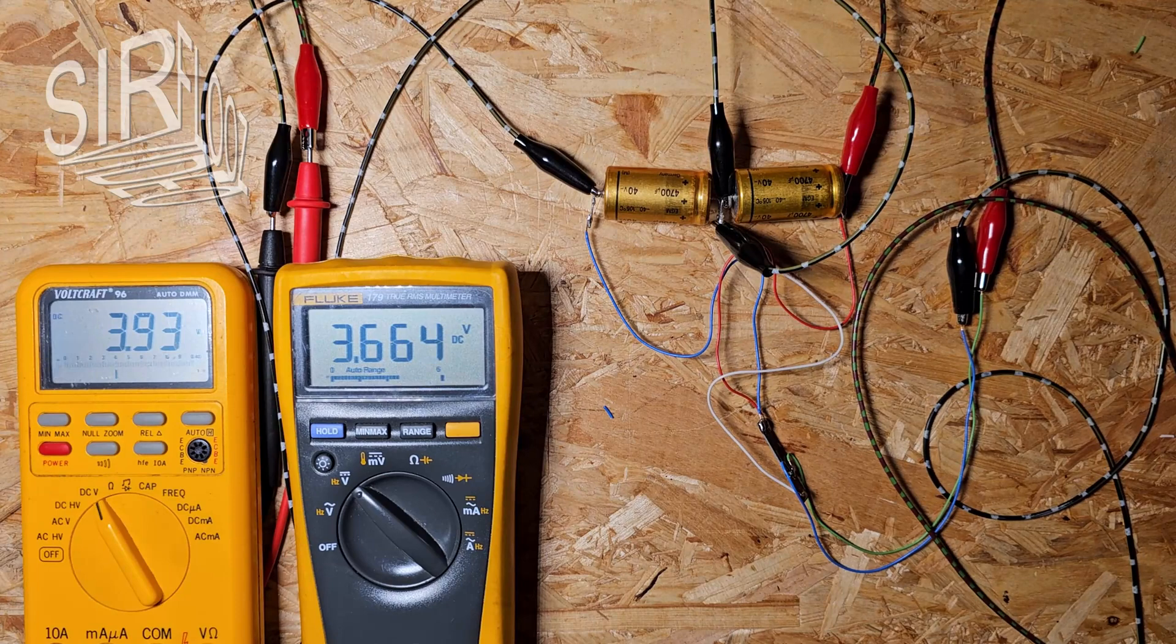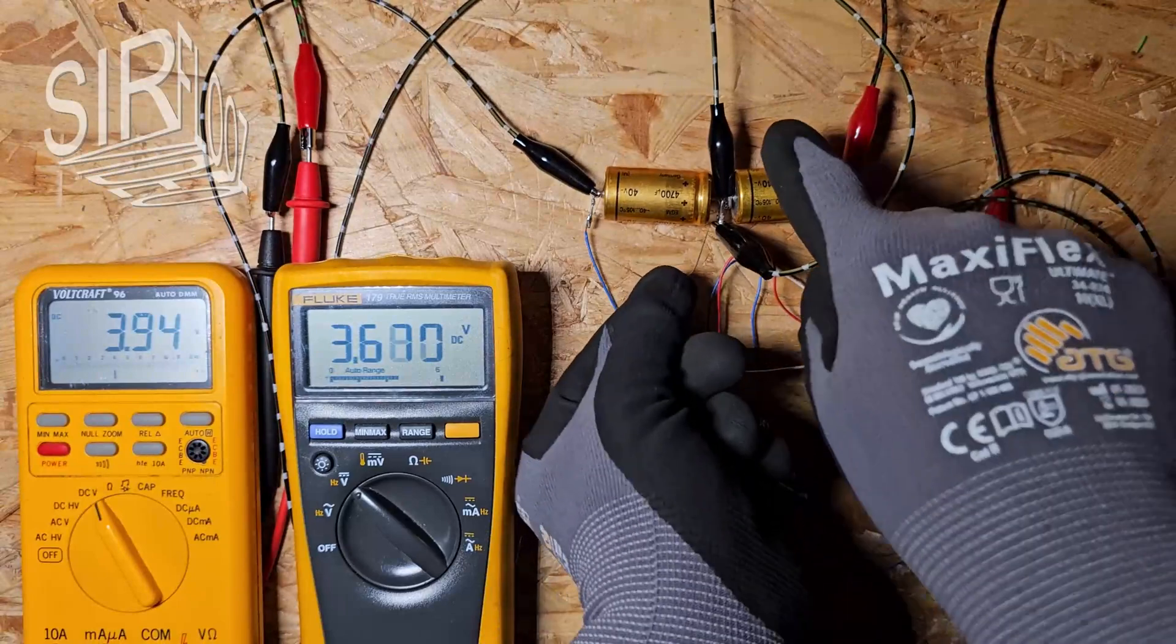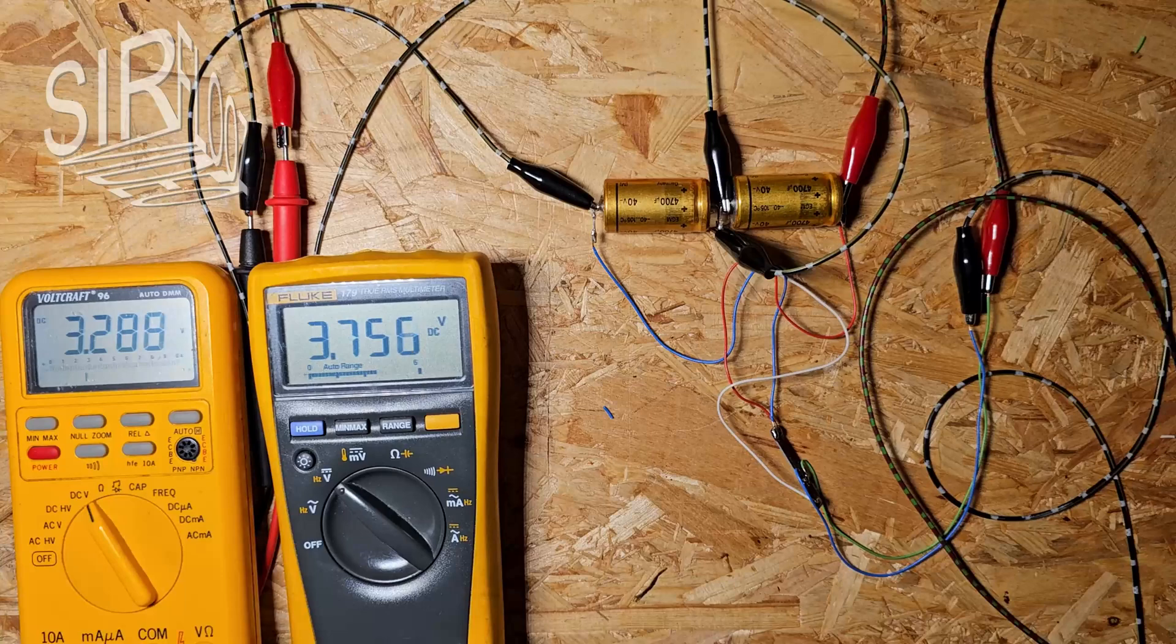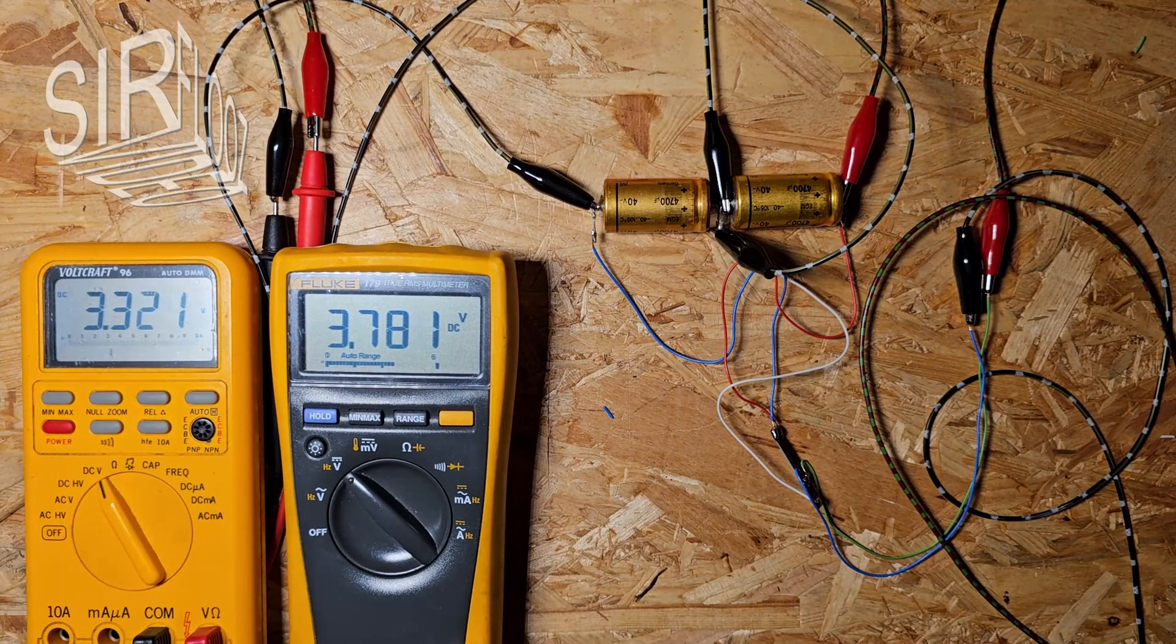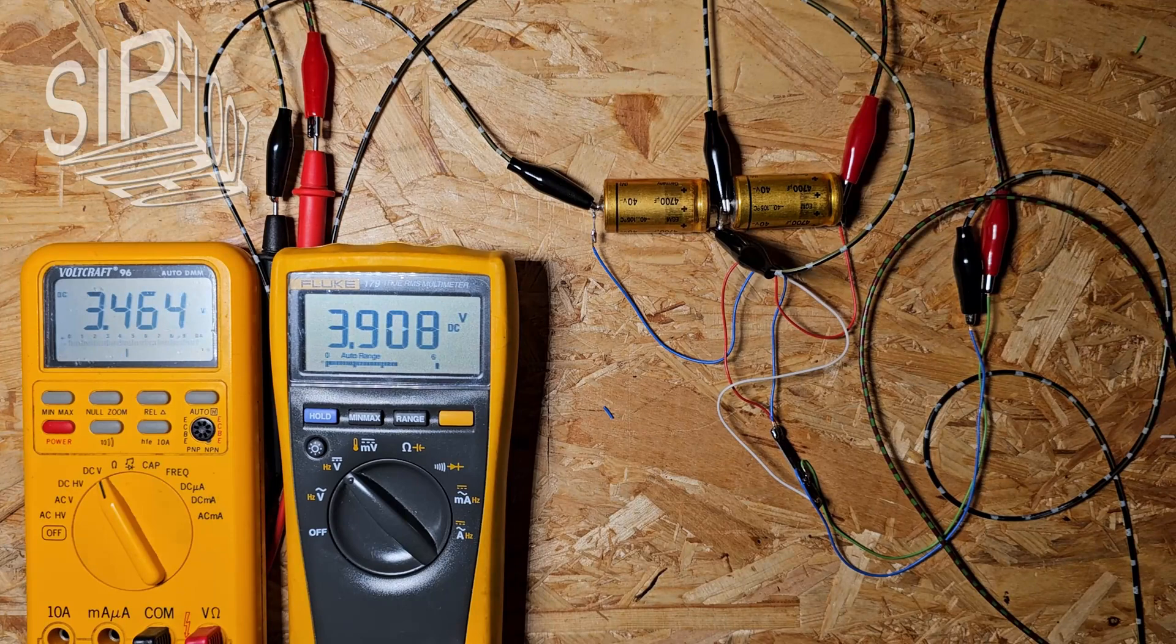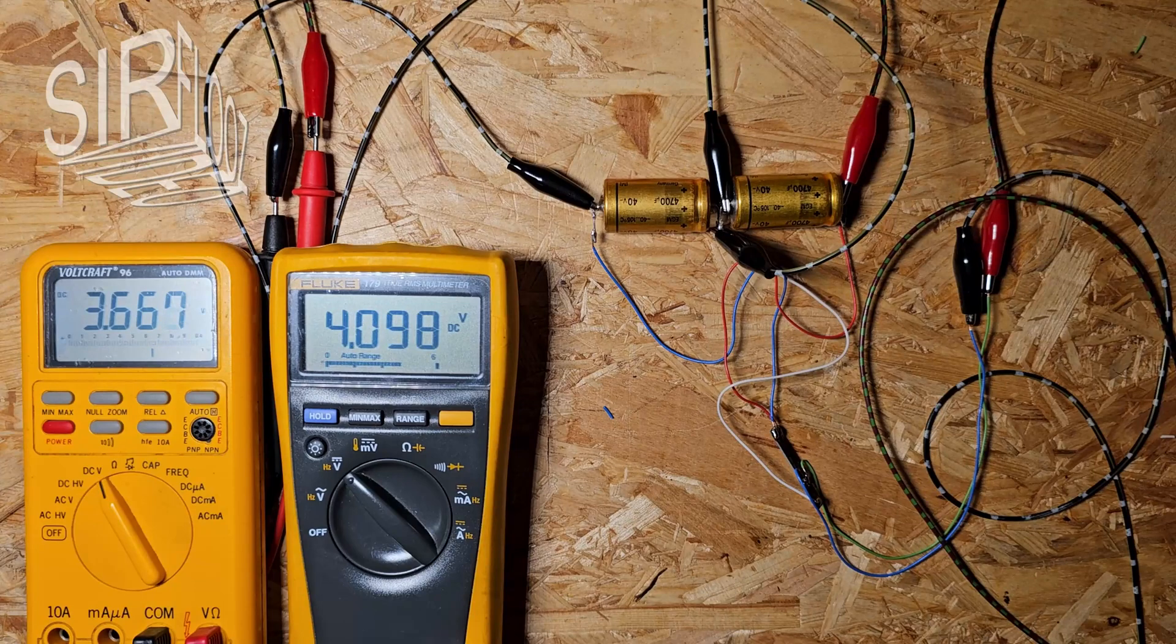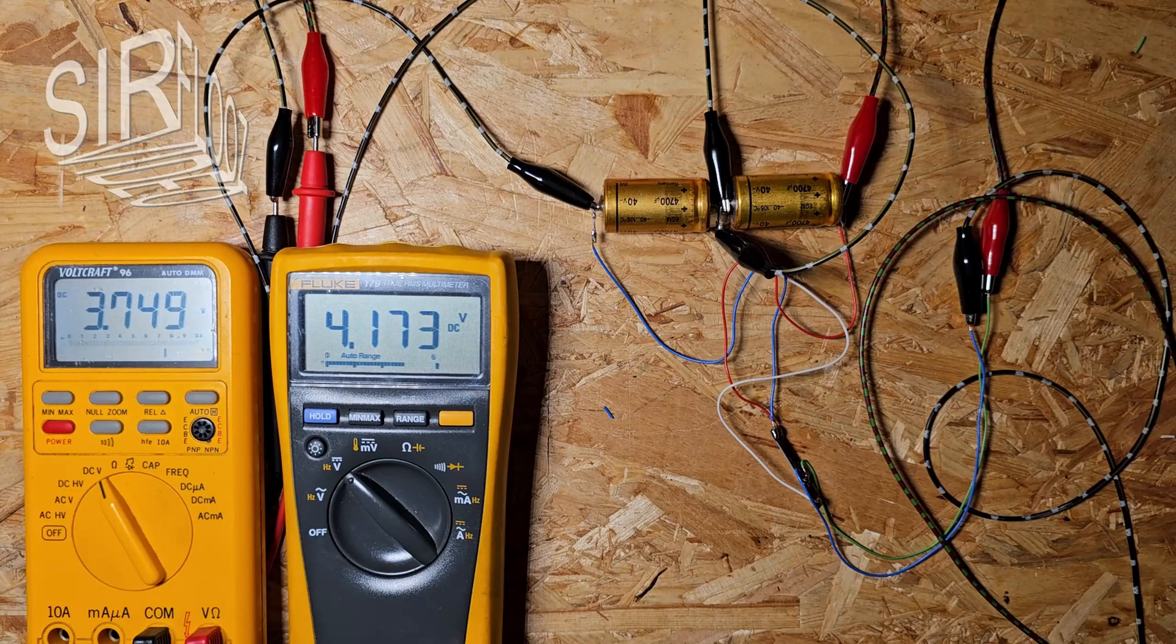As a disadvantage, if the right cell reaches 4.2 volts first, I discharge the left cell a little with a 10k resistor. Now it's getting exciting. When will it be shut off? I think it's fine. The right cell is done.